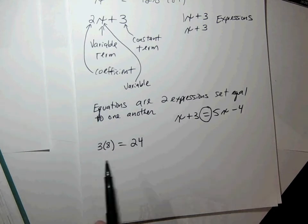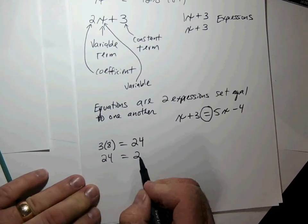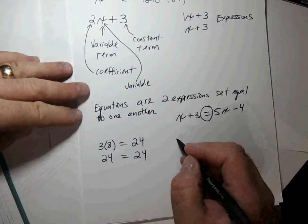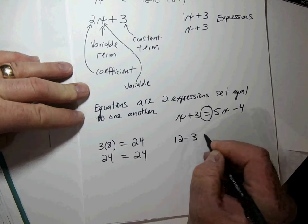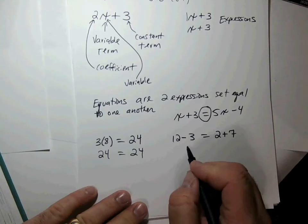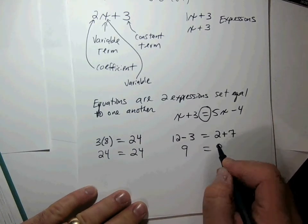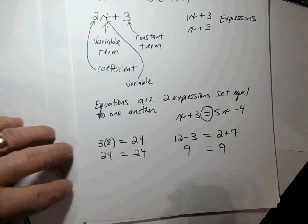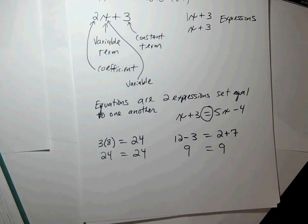Example one asks us to verify: are these two things really equal, like the equal sign says? We do a little homework to verify — yes, that one looks good, that's a legitimate equation. Part B says 12 minus 3 equals 2 plus 7. 12 minus 3 is 9, and 7 plus 2 is also 9, so yes, also a legitimate equation. We verified those two equations are legit.